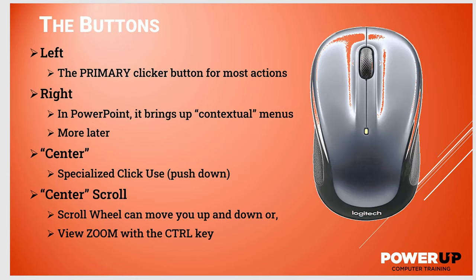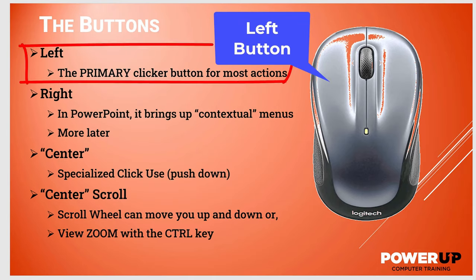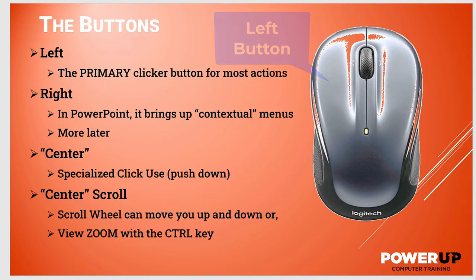Let's get started with the most common three-button mouse as seen here. We're working with a Windows-centric mouse, but similar commands will also work on an Apple Mac. The left button by default is your primary button — 90% plus of all your actions will be done with this button. We'll see both click and click-and-drag actions with the primary button in a few moments.